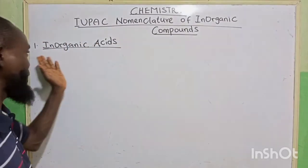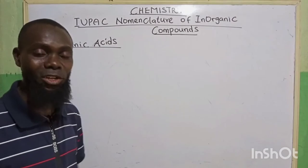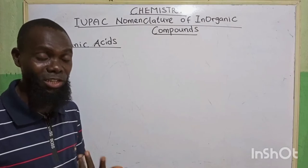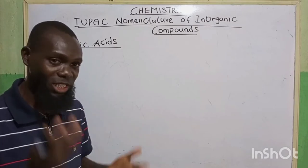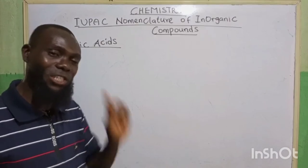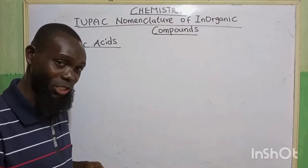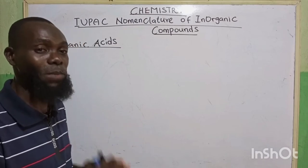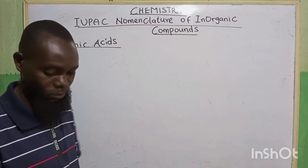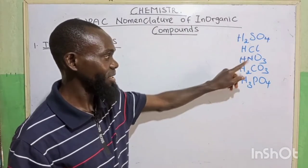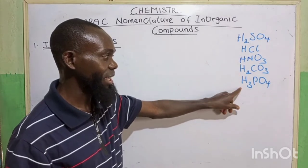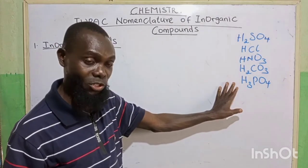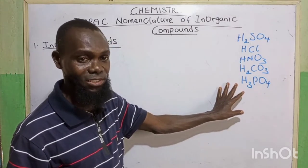The first one we're going to be looking at is inorganic acids. What are inorganic acids? Inorganic acids are acids that are derived from mineral substances, inorganic substances, like the first 20 elements. Any substance that starts with hydrogen is an inorganic acid, or what we call mineral acid. For example: H₂SO₄, HCl, HNO₃, H₂CO₃, H₃PO₄. All these acids start with hydrogen. They are called inorganic or mineral acids.